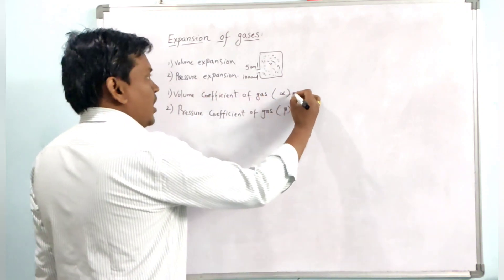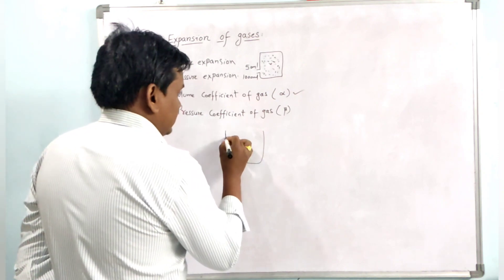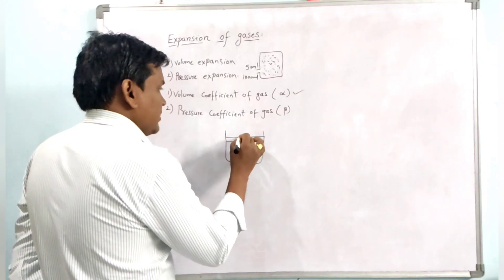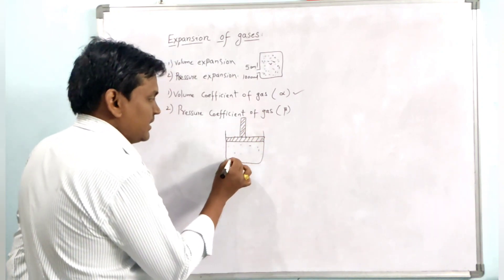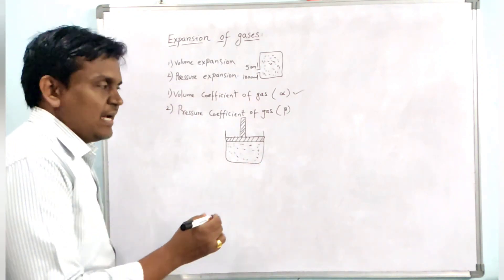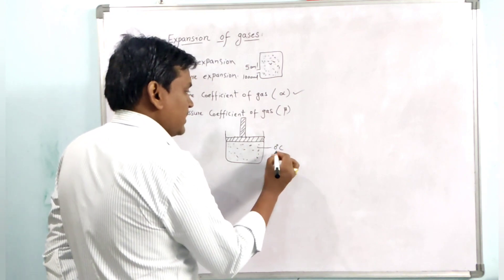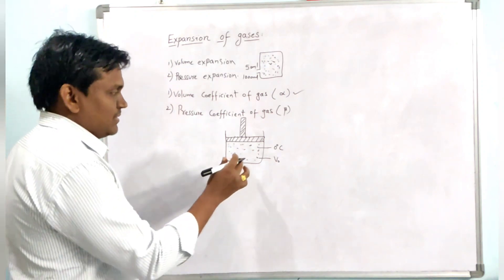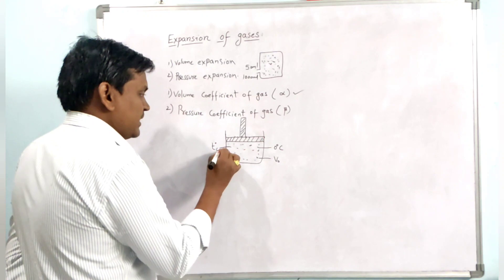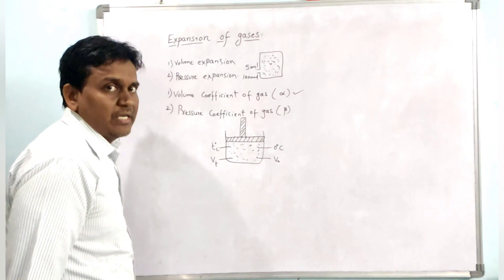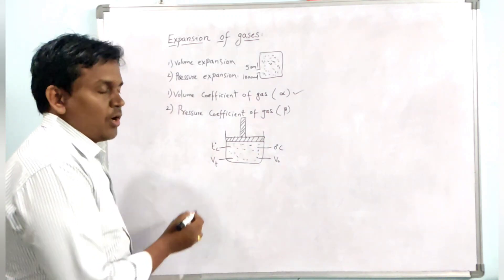Let us consider the volume coefficient of gas. Consider a beaker which has a piston, and inside it is filled with gas. The gas has some volume. The volume at zero degree Celsius is V₀. When the temperature is raised to T degree Celsius, the volume of the gas changes to Vt.